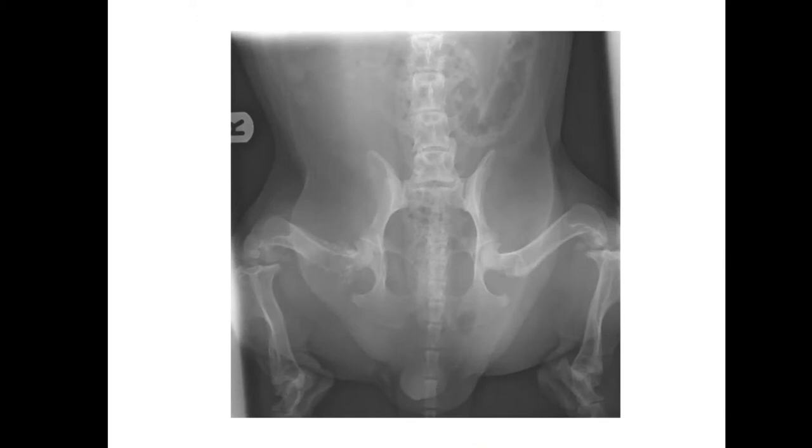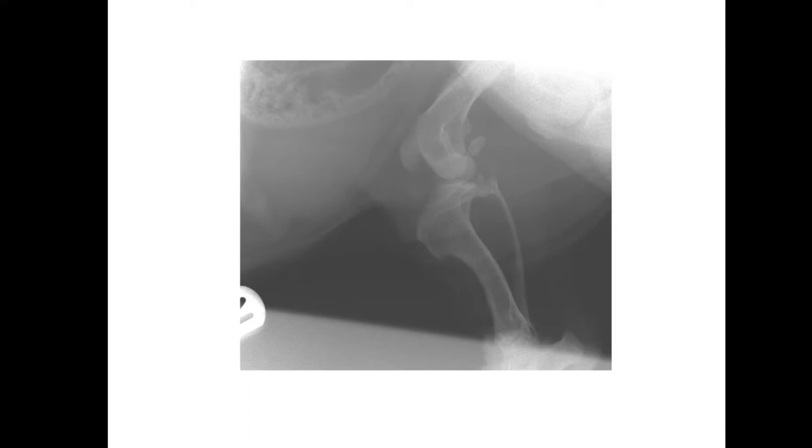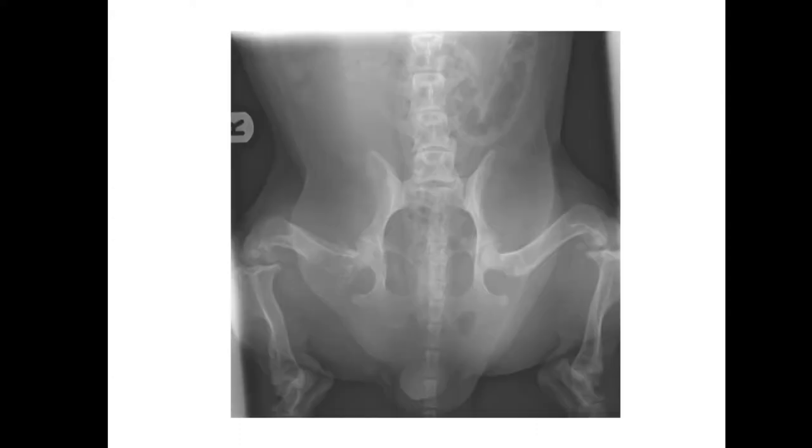We have two views of this animal. First, a mediolateral view of the right stifle, in which I cannot see much regarding problems, to be honest. I would say there is probably a little bit of osteoarthritis in the stifle joint and maybe a little bit of joint effusion. The quality is a little bit poor to see tiny details, but I would say the fat pad is a little bit retracted. But that was not my main finding.